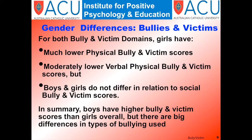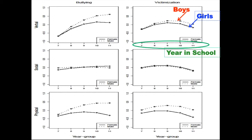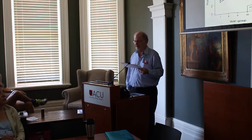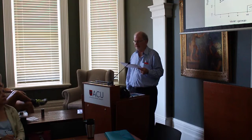The age differences are a bit more complicated. Age has linear and nonlinear relations with the bully-victim factors. For all six factors, scores tended to be lowest in year 7, increased to year 8, remained reasonably stable in years 9 and 10, and declined a little bit in year 11. However, the pattern varied depending on the bully-victim factors.